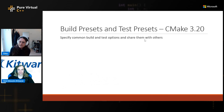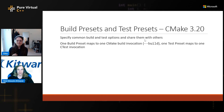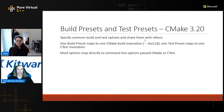There are also build and test presets, added in CMake 3.20. For build presets, you can specify a configuration — so for a multi-config generator like Ninja multi-config or Visual Studio, you can set it to debug or release. You can also specify a list of targets to build, a parallel level, and any other options available with --build. For test presets, you can specify the configuration and a regex of which tests to run, plus any other settings available on the CTest command line.